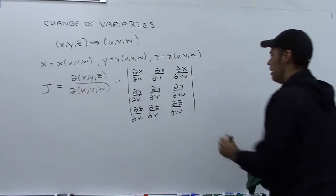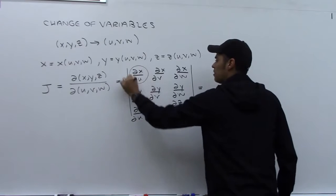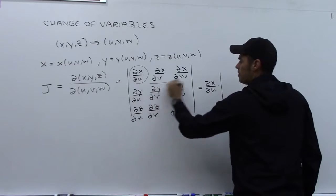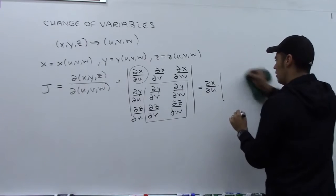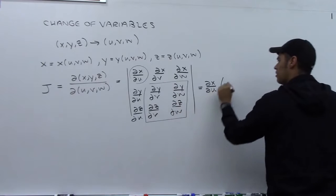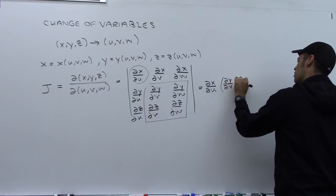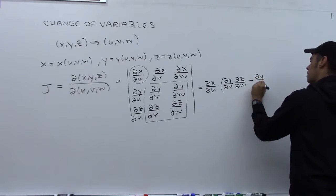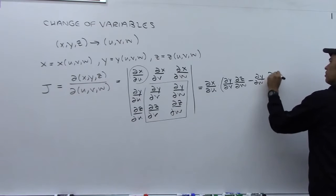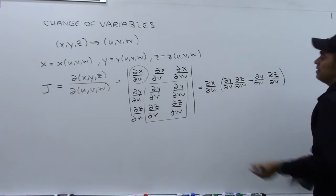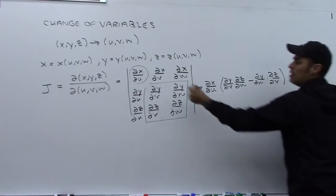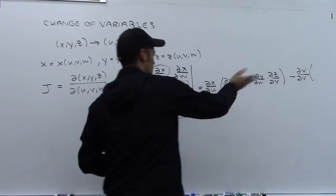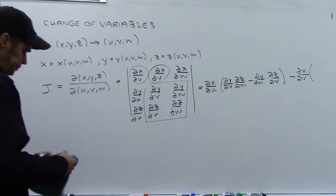To evaluate it, starting with partial X with respect to U times the 2×2 determinant of the remaining entries — so partial Y/∂V times partial Z/∂W minus partial Y/∂W times partial Z/∂V — and then continuing with the alternating sign pattern. The next term would be minus partial X with respect to V times another 2×2 determinant, giving three terms total. That's how you change variables with three variables.